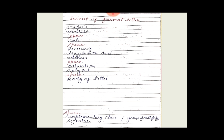After the salutation, we write the subject of our letter. Then we leave space and start the body of the letter — more than six or seven lines, written in two paragraphs. When we complete the letter, we leave space.